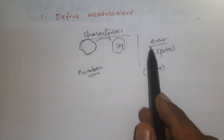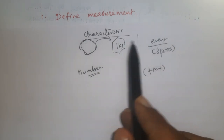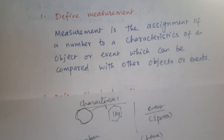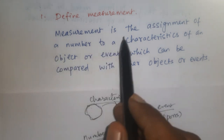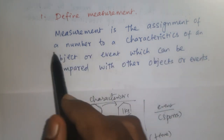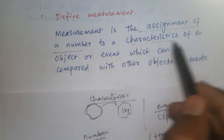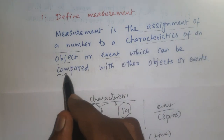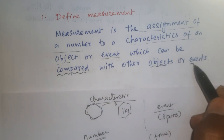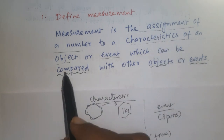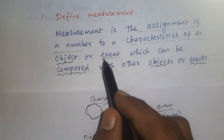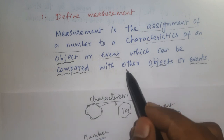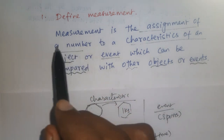Any event or characteristic will be compared with other objects or events. Now the definition: measurement is the assignment of a number to a characteristic of an object or event, which can be compared with other objects or events. That measured value compared with the other objects or events is nothing but measurement.